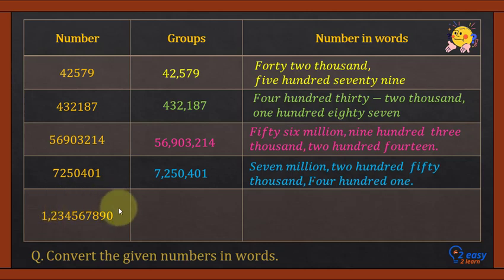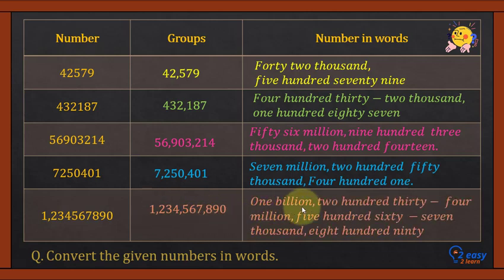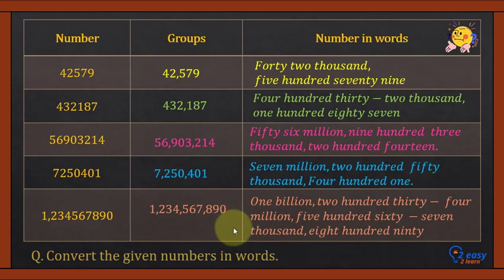Now divide this big number into groups. Three digits, comma, then next three digits, comma, then next three digits, comma. So we have: hundreds, thousands, millions, and billions. The answer is: one billion two hundred thirty-four million five hundred sixty-seven thousand eight hundred ninety.